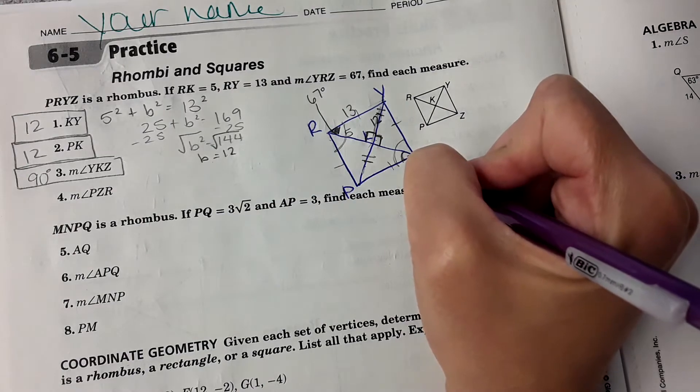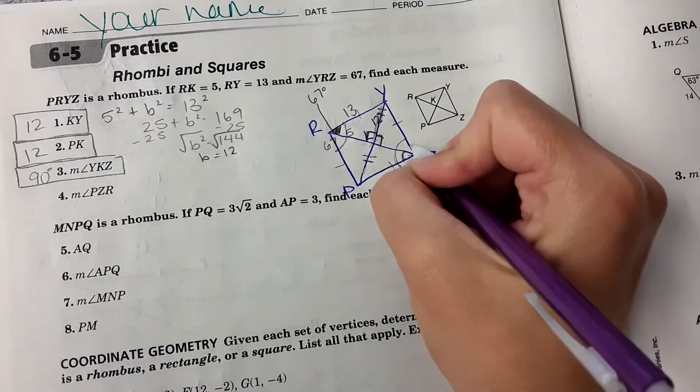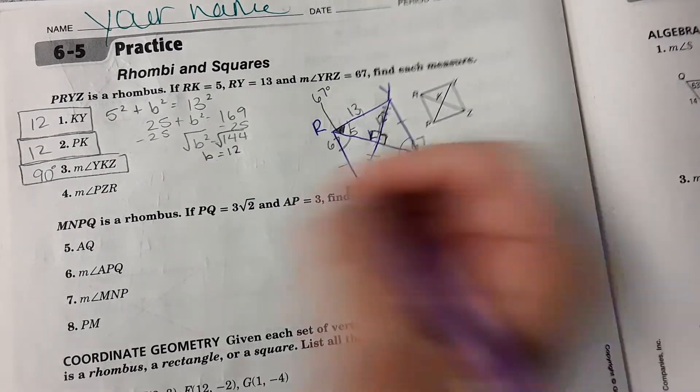And the diagonals bisect that angle. So therefore, if this is 67, this is 67, this is 67 degrees, and so is this. So PZR is 67 degrees.